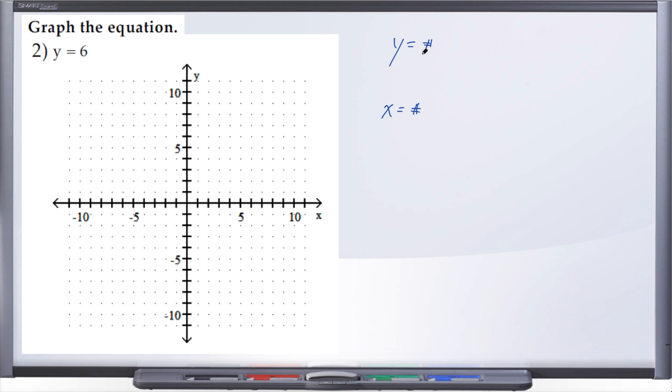With these, all you're going to do is go to the axis that you've been given. In this case, we were given y equals 6, so go to the y-axis, your vertical axis, and plot a point at the number that they give you. So we're going to plot a point at 6.